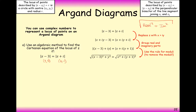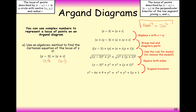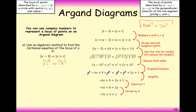To solve this: square both sides to get rid of the square roots, expand both brackets, cancel out terms that appear on both sides, and rearrange to make y the subject. Subtracting and dividing appropriately gives the line y = -3x + 4.